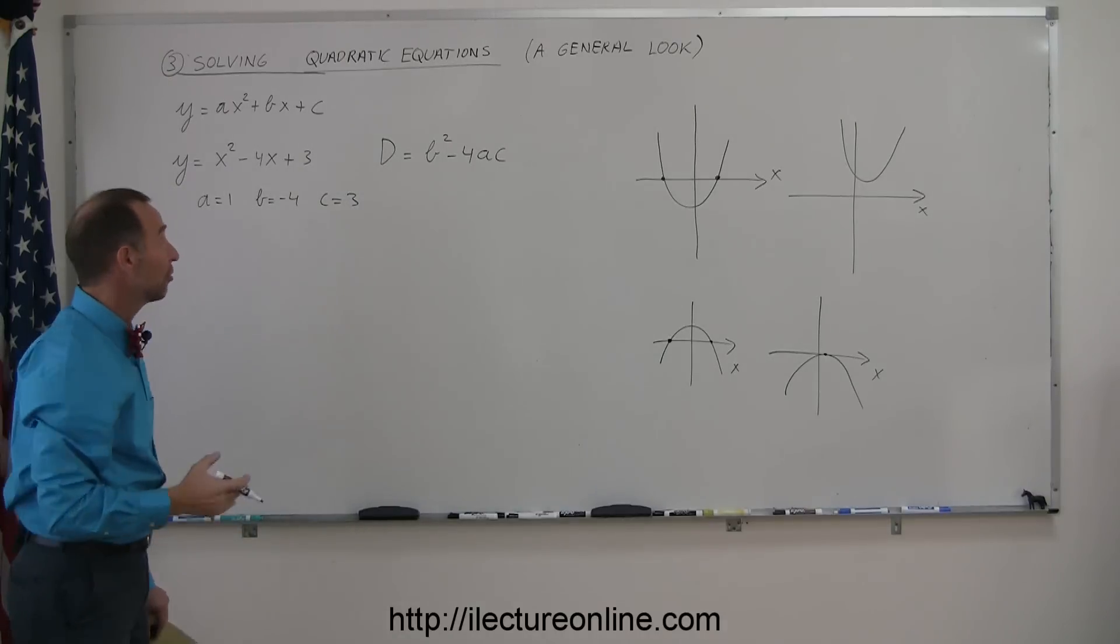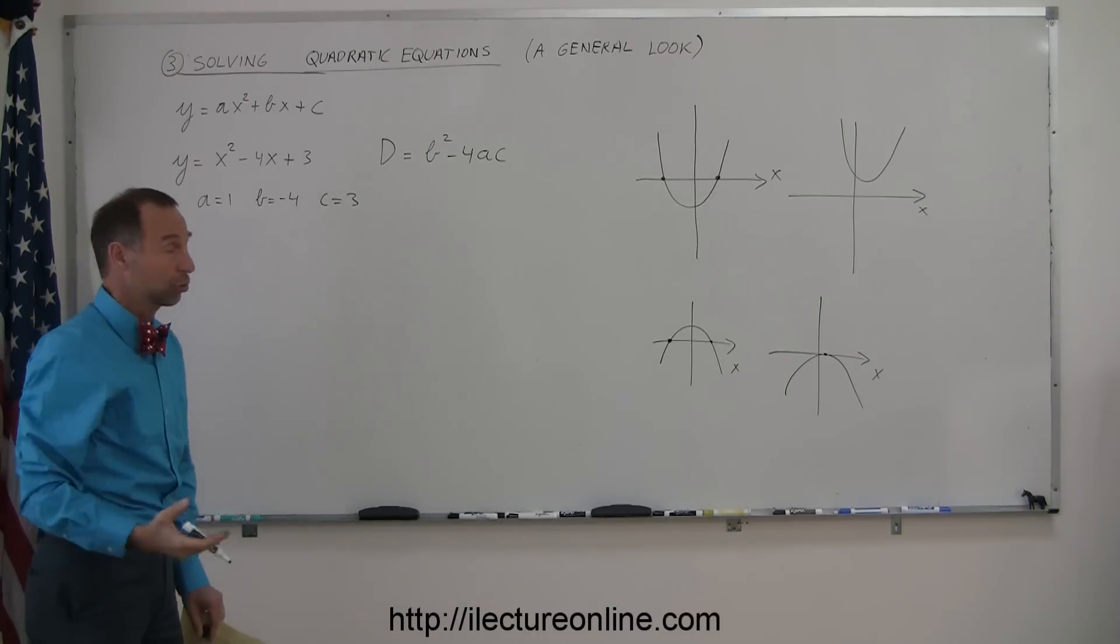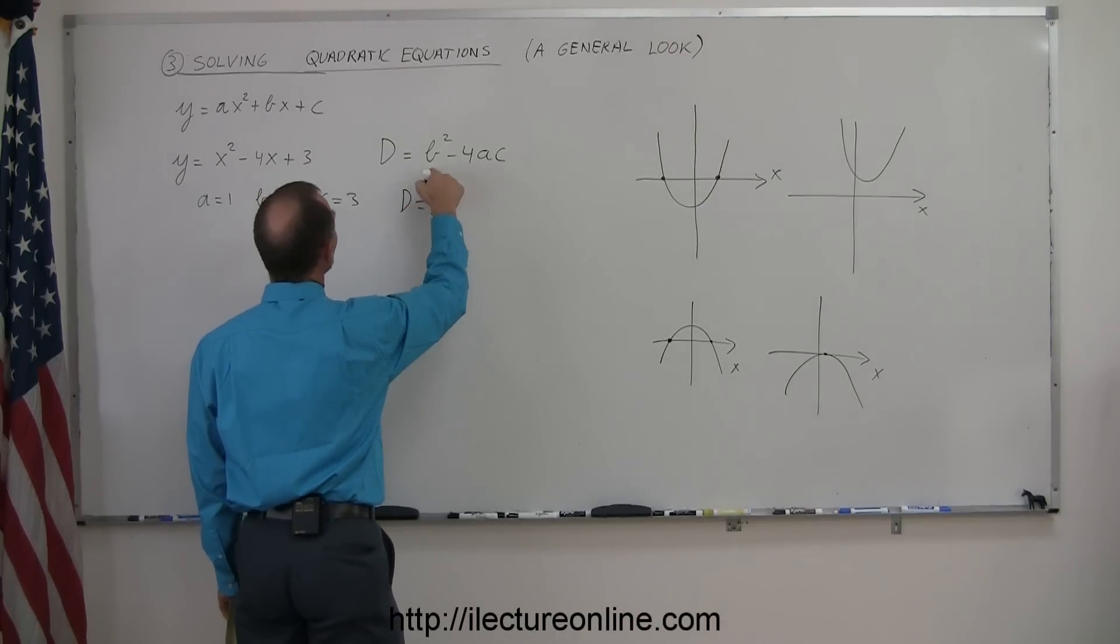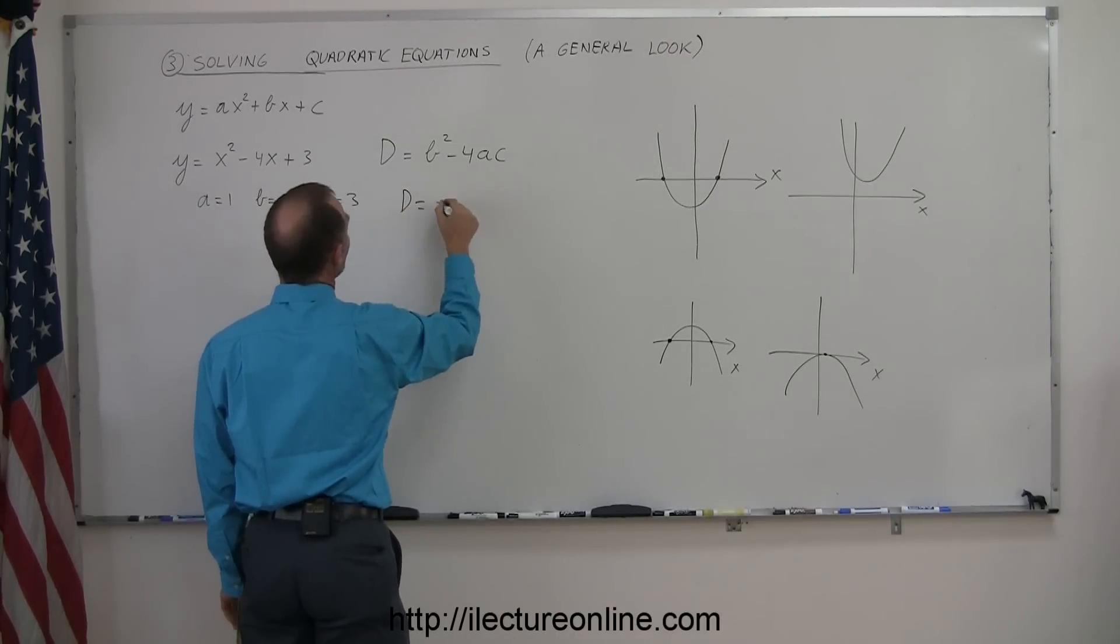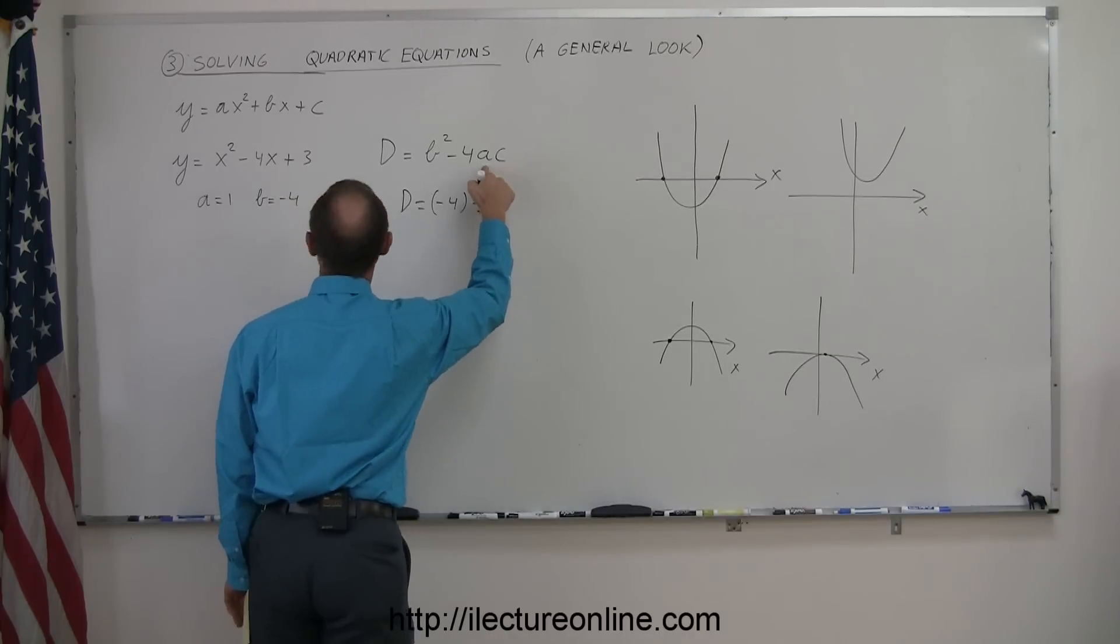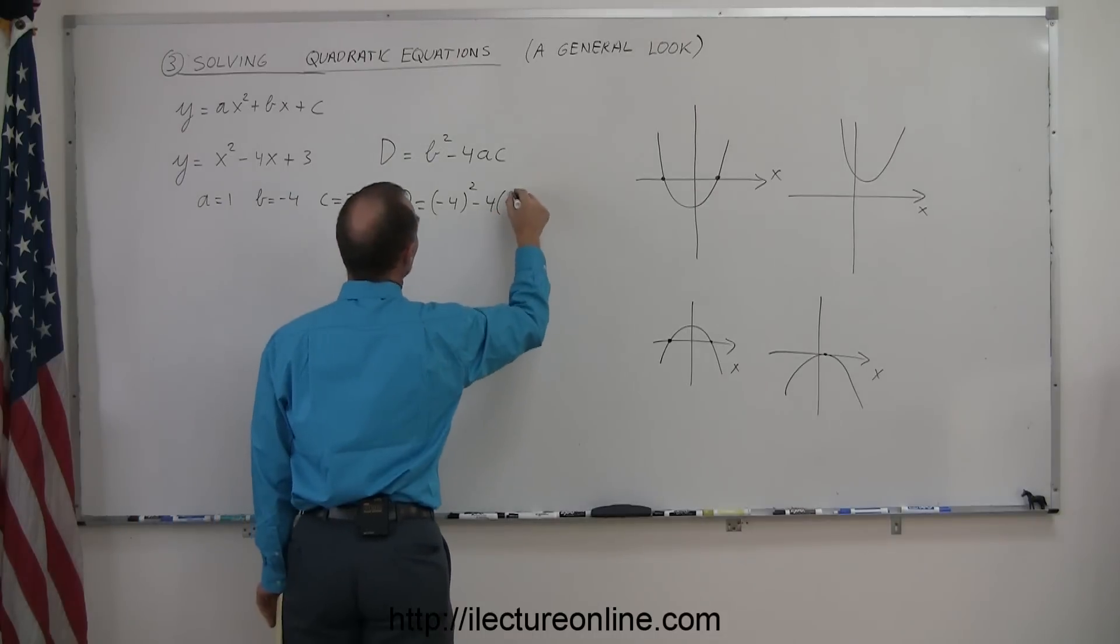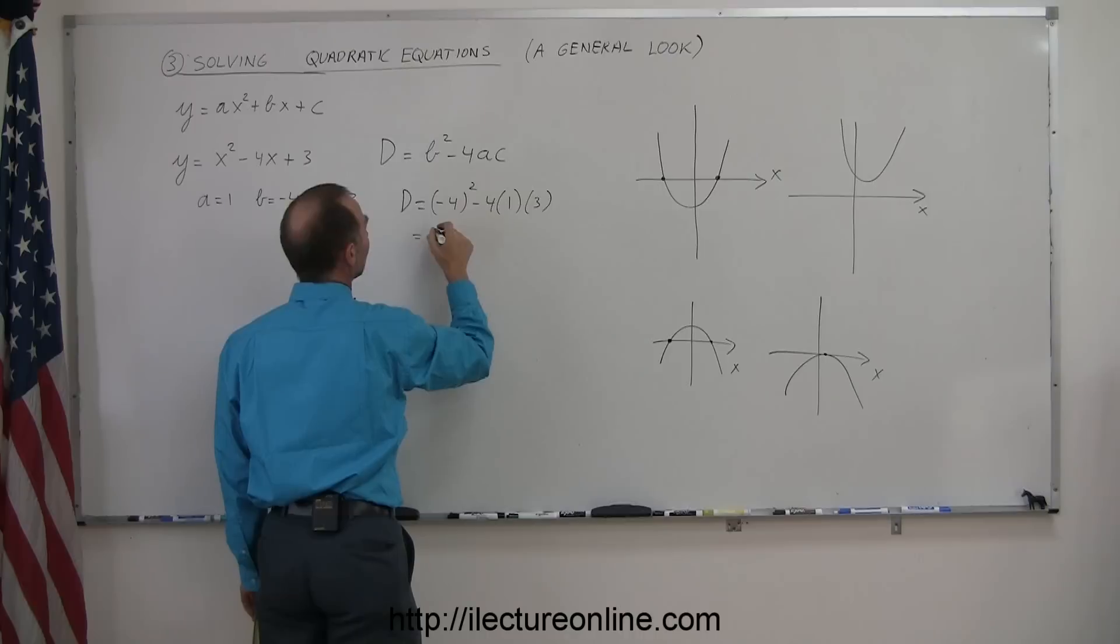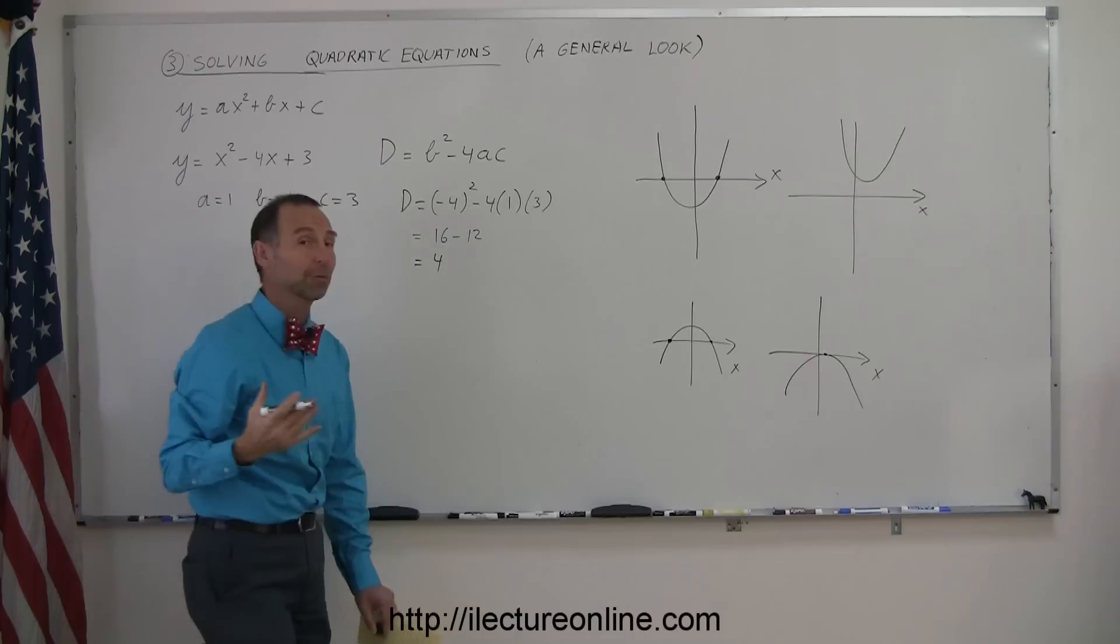And by using this example, let's calculate the determinant and see if this equation actually has roots or solutions. So d is equal to b squared, since b is a negative 4, we take negative 4 quantity squared, minus 4 times a, a is 1, and c in this case is 3. So this is equal to 16 minus 4 times 3 is minus 12, this is equal to 4. All right, my determinant is 4.